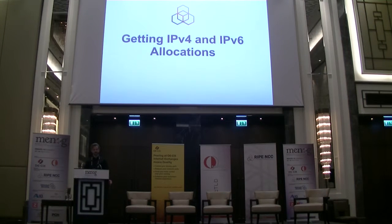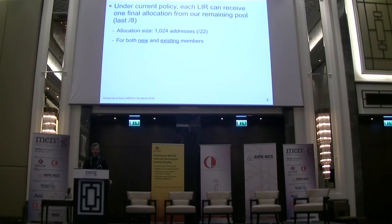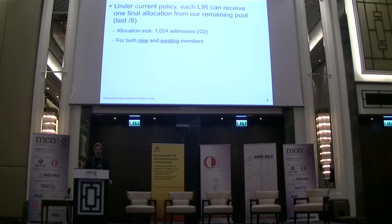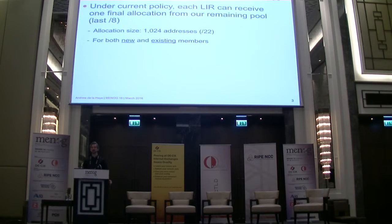First of all, let's begin with the stuff dreams are made of — getting IP addresses. Getting an IPv4 allocation from RIPE NCC has never been more simple to do. The problem is that all you can get is limited by the RIPE community policies to one /22 block. That's 1,024 IPs.